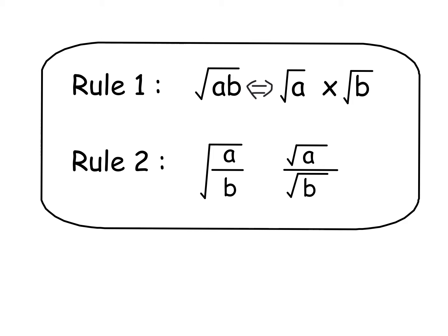But similarly, if you've got a fraction, that's really just a division. If you've got a square root of a fraction, you can split that up, and you can take the square root of the top and the square root of the bottom. And the reason I put in these symbols here, where it's the double arrows, is it works both ways.